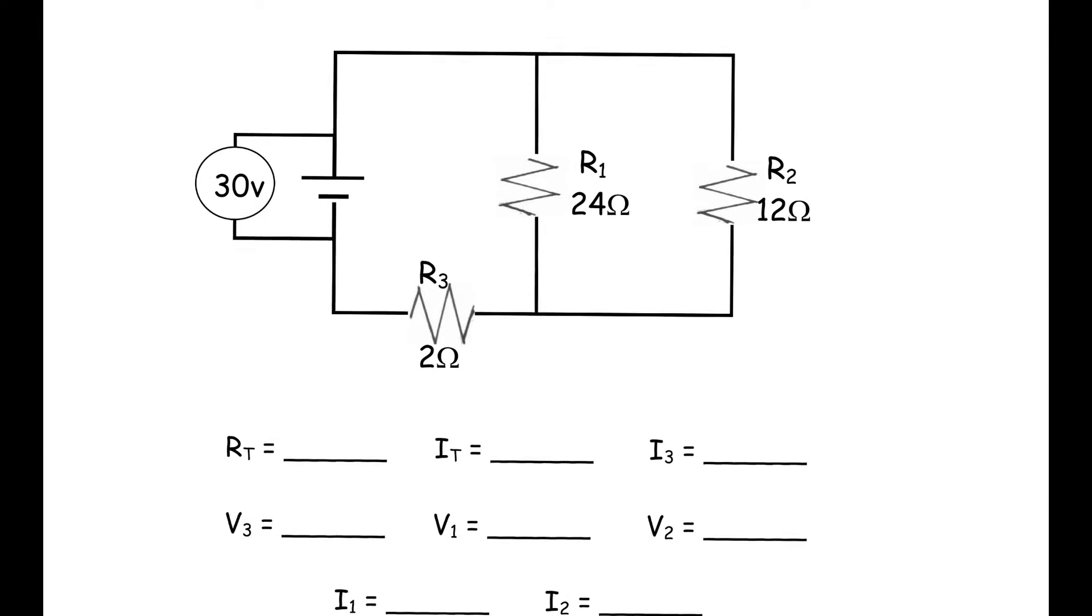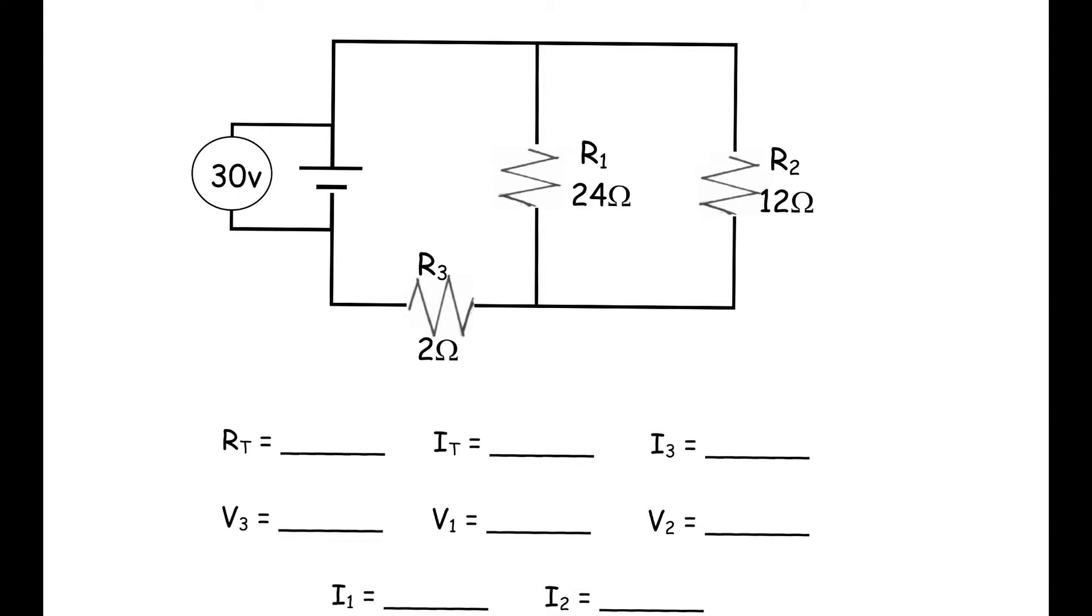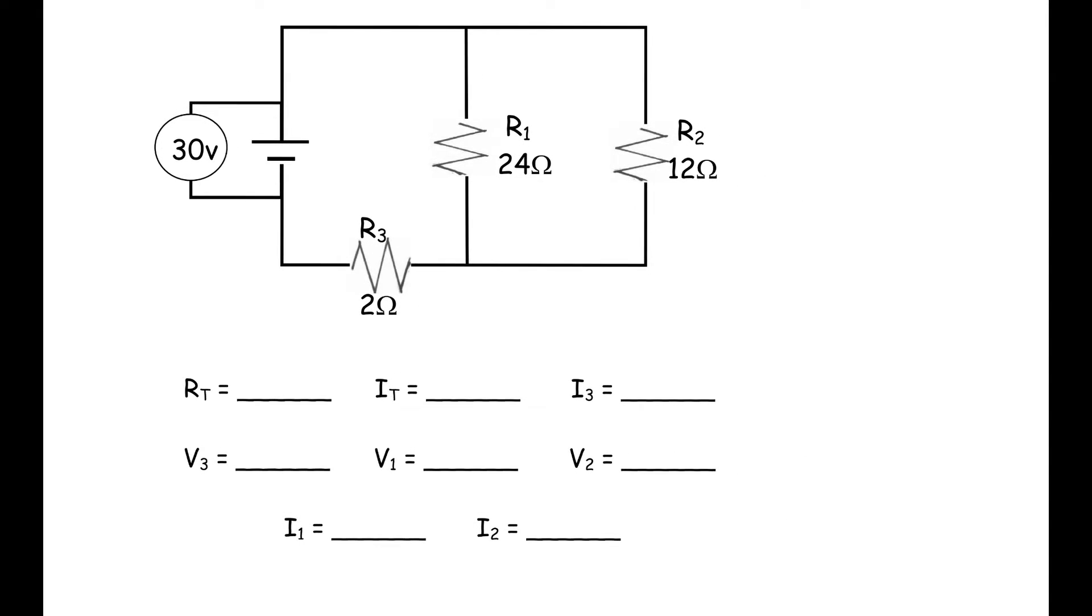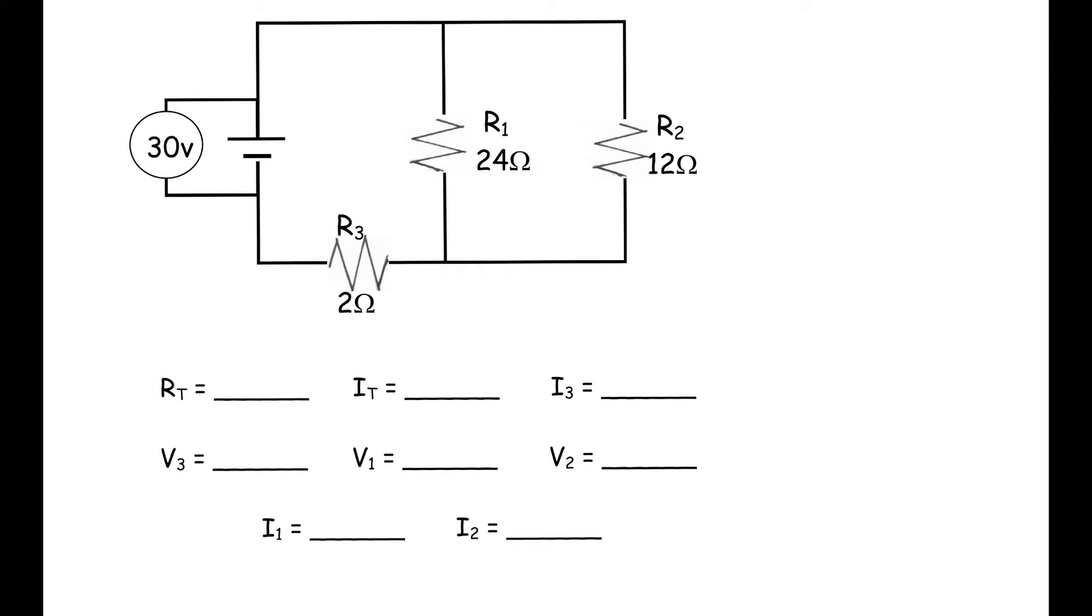So the first problem is this one. As you can see, we have 30 volts as our total voltage. We have a 24-ohm and a 12-ohm resistor that are in parallel, and then they're combined with a 2-ohm resistor which is in series with the combination. That's what makes it a complex circuit, because it's got both parallel and series components.